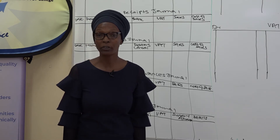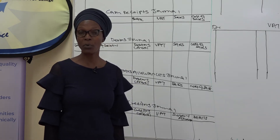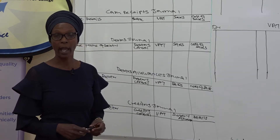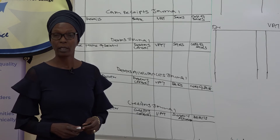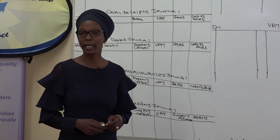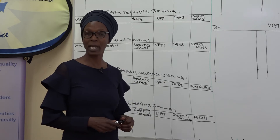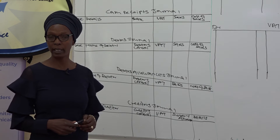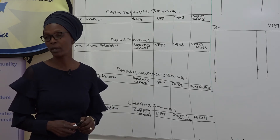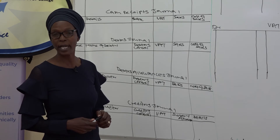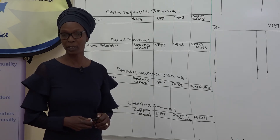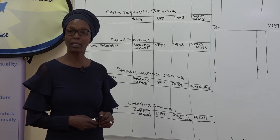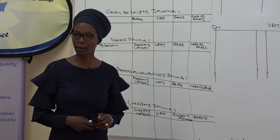Firstly, we have the cash payment journal. This is a book where we record all the payments made by the business owner. The VAT that appears in the cash payment journal is an input VAT, because everything in that subsidiary journal is a payment made by the business owner to the suppliers.